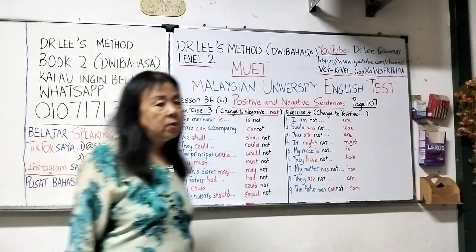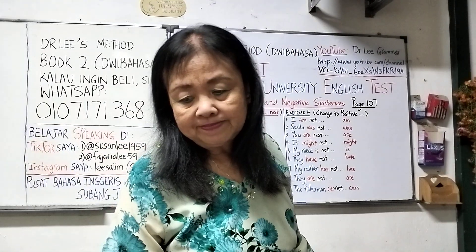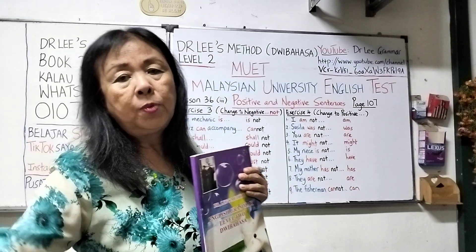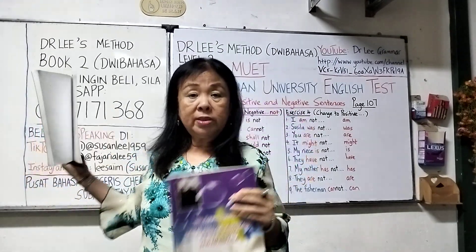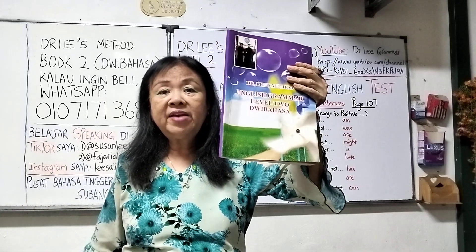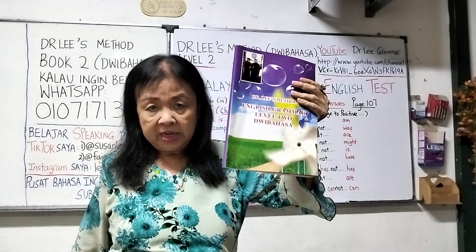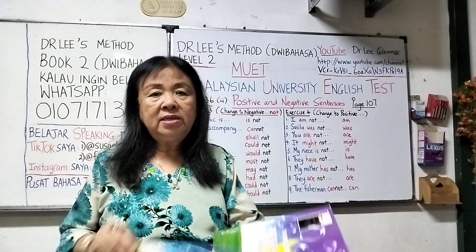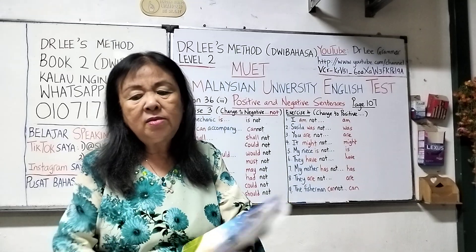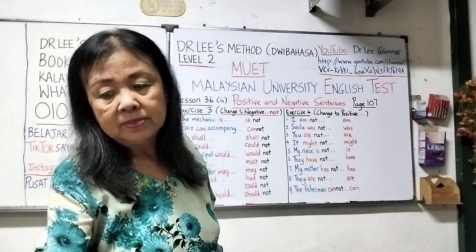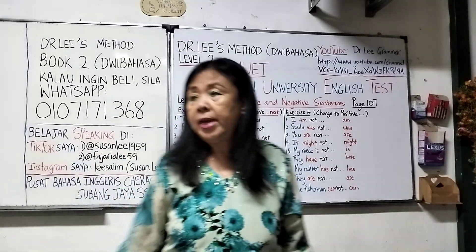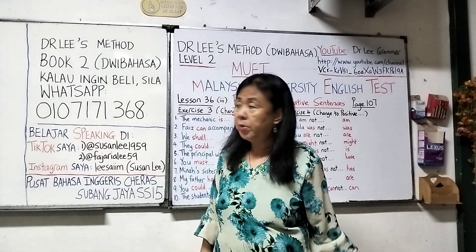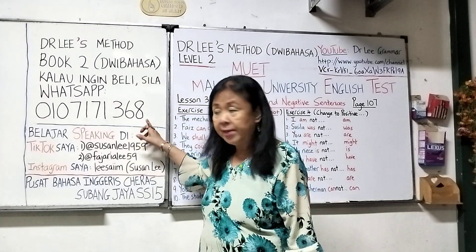If you want to buy my books — Book Two or Book One — you can WhatsApp to me. Book Two I have one left only in stock, so I will print more but it will take around two to four weeks. If you want to wait, that's okay. If you want the book right away, just WhatsApp to me and order.